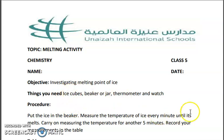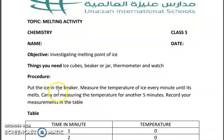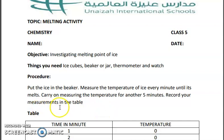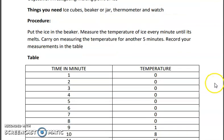The procedure to perform this activity: put the ice in the beaker or jar that you are using, then measure the temperature of the ice every 5 minutes until it melts. You don't have to heat it — just leave it at room temperature. Check the temperature every 5 minutes, and carry on measuring for another 5 minutes after melting. Record your measurements in the table.